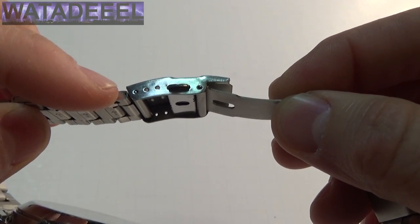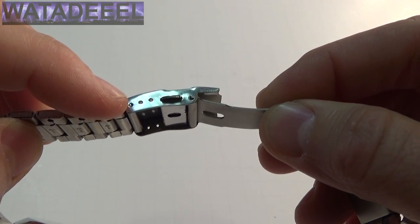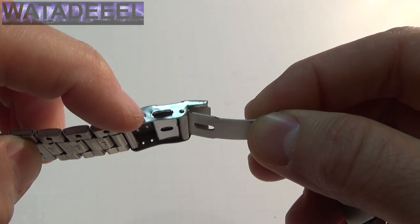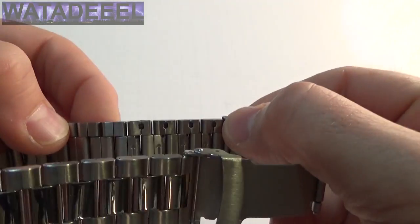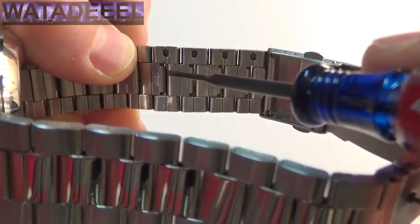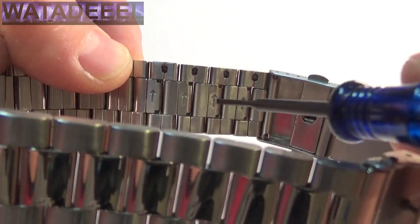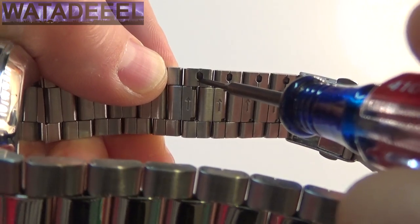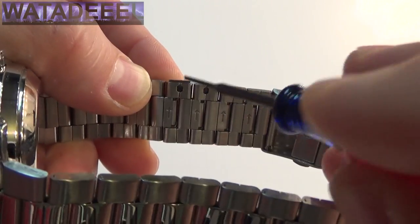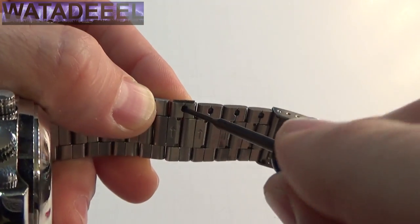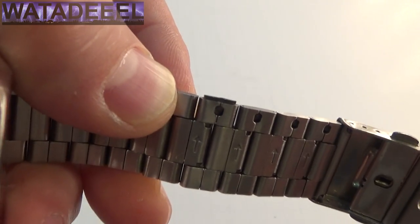One thing you can do if you haven't figured it out yet is you can take this pin out and shorten the watch a little bit. But if you need to shorten it even more, you can do that by selecting one of these links that has an arrow on it and just sticking a small screwdriver in there and rotating. See how that pin is coming out? You can see how it's come out.